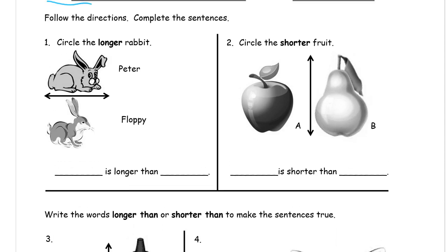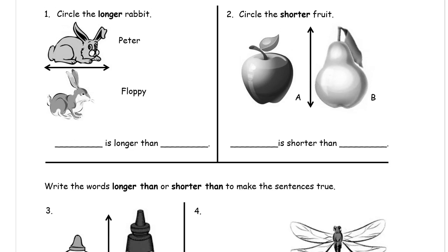Follow directions and complete the sentences. Circle the longer rabbit. You can see that their endpoints are lined up here at their tails. And Peter sticks out longer than Floppy does. So Peter is longer than Floppy. Their names are right here.